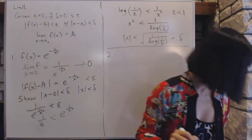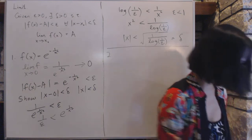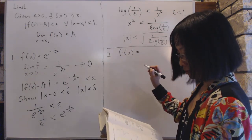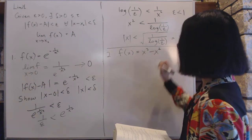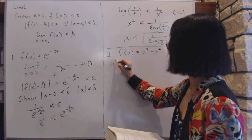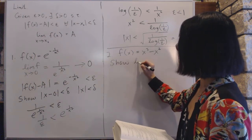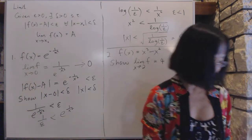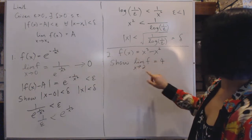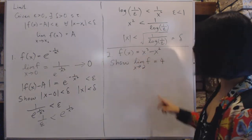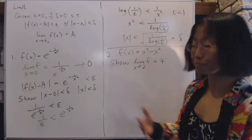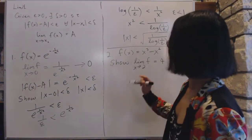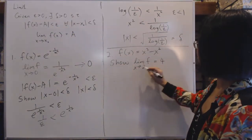Next, Example two: let f(x) equal x³ minus x². Show that the limit as x approaches 2 of f equals 4. This is more obvious than the previous problem — if you plug in x equals 2 you get 4. But in mathematics we must try to prove what is point-blank obvious; that is one of our missions as mathematicians. So let's do that.